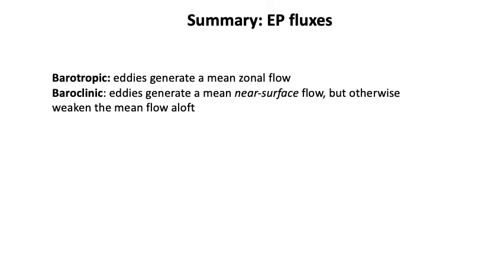To summarize from the EP fluxes: in the barotropic case, eddies generate a mean zonal flow through momentum convergence. In the baroclinic case, eddies generate a mean near-surface zonal flow through both momentum fluxes and buoyancy fluxes, just near the surface. But otherwise, they actually weaken the mean flow aloft in net — meaning the buoyancy flux term more than offsets the momentum flux term. So if the eddies weaken the jet in the free troposphere, what sustains it? We need to talk about the Ferrel cell.